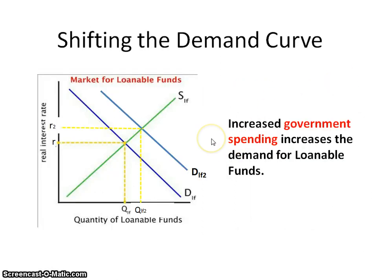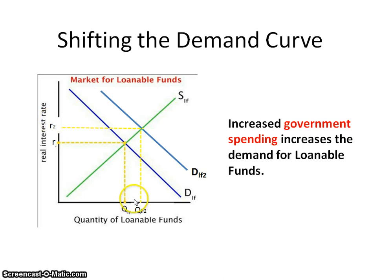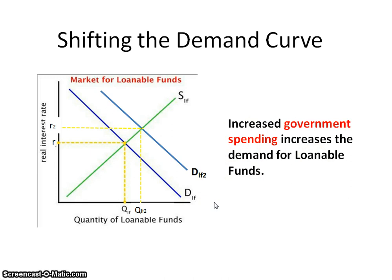On the demand side of the loanable funds market, one of the most common examples is government spending. When the government increases spending, it increases the demand for loanable funds. When that happens, you see an increase in the real interest rate and an increase in the quantity of loanable funds. Consumption and investment can also shift the demand curve, but government spending is the most commonly used example.